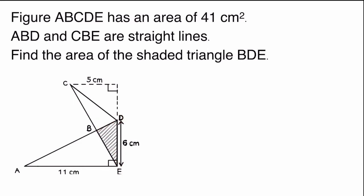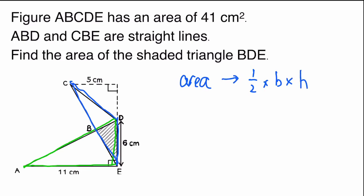Are you able to see the two triangles? Let me highlight it for you. There is one triangle here — can you see it? The next triangle is here. We know that to find the area of a triangle, the formula is half times base times height. Looking at the triangle in green, we know the base and the height is 11 centimeters, so there is no problem finding the area of this triangle.